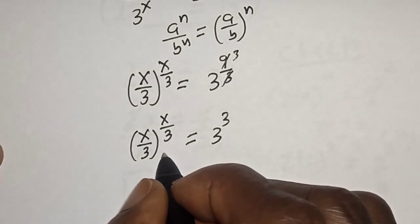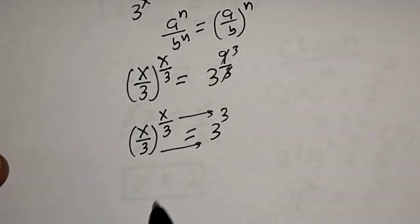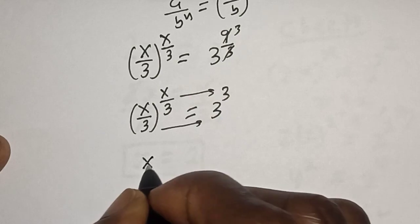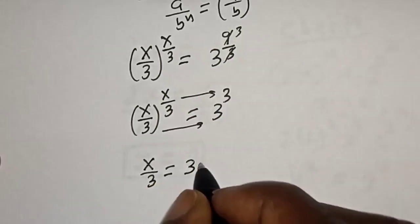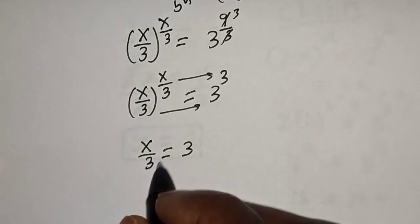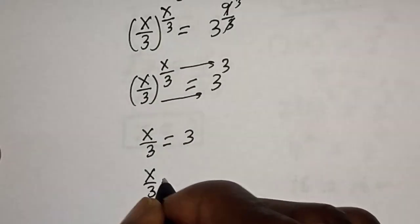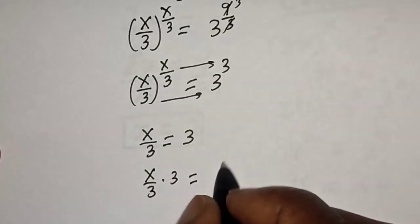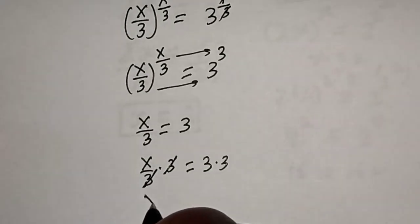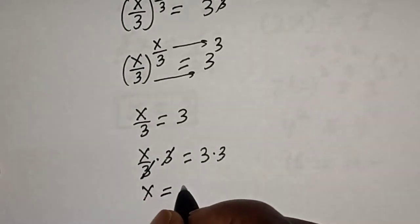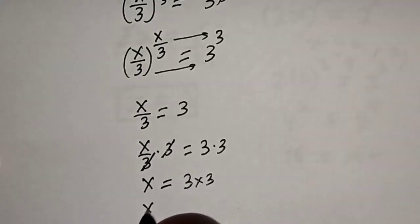By comparing both sides, the base and exponent match, so s over 3 is equal to 3. Multiplying both sides by 3, s is equal to 9.